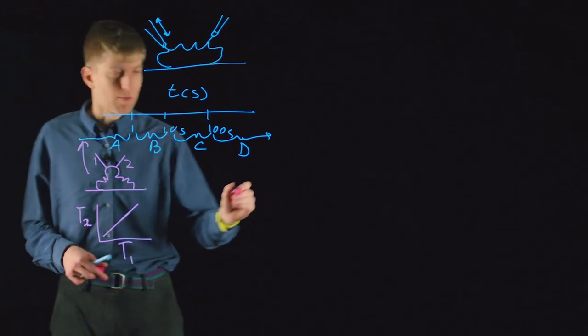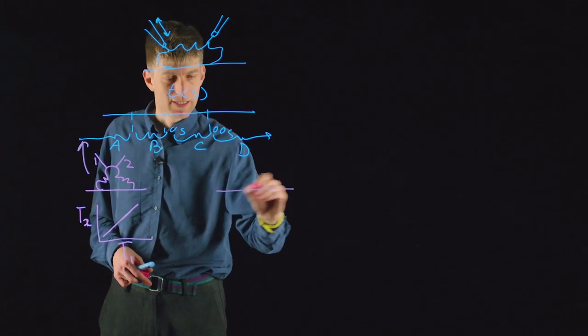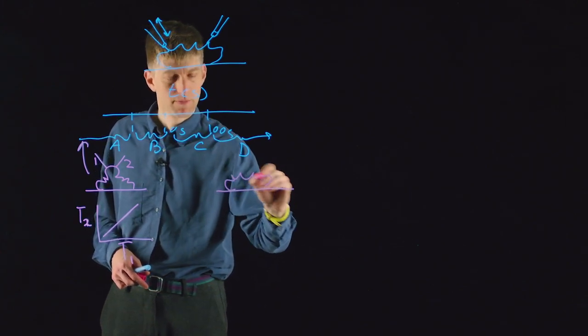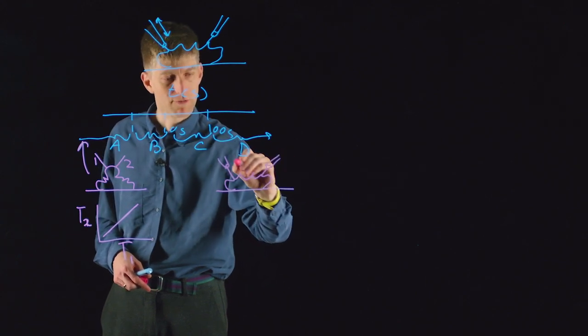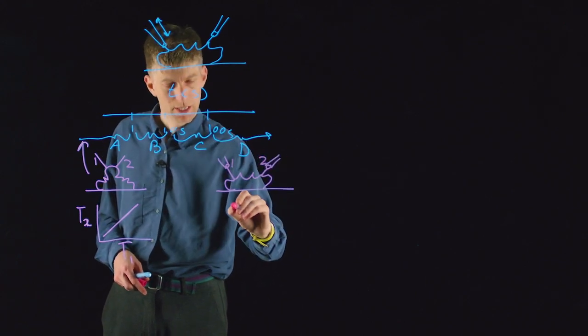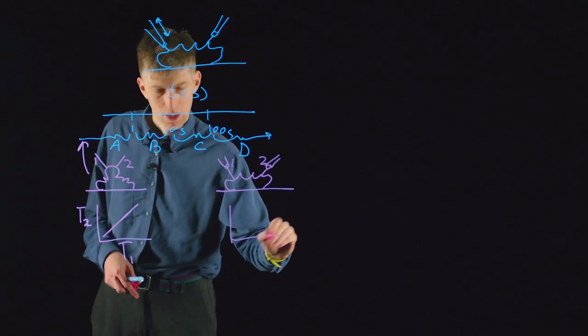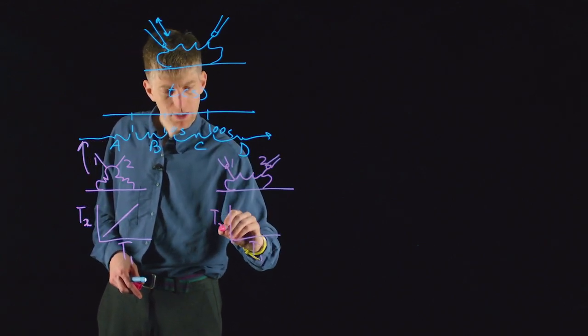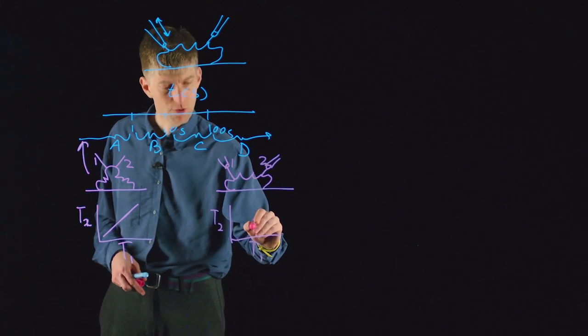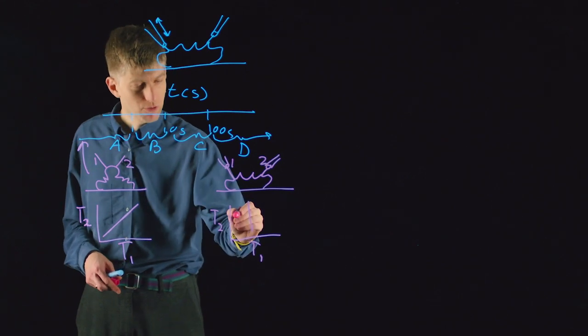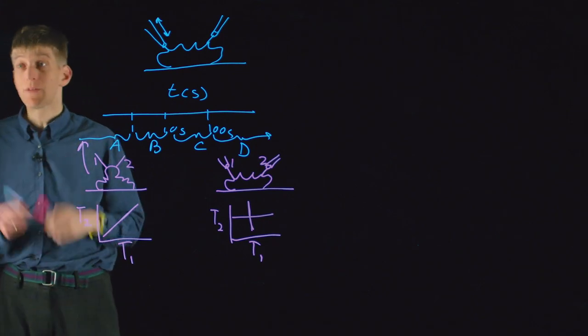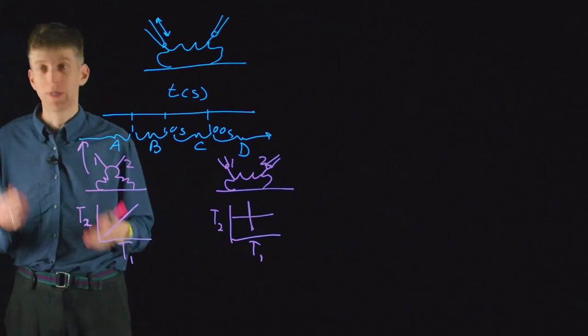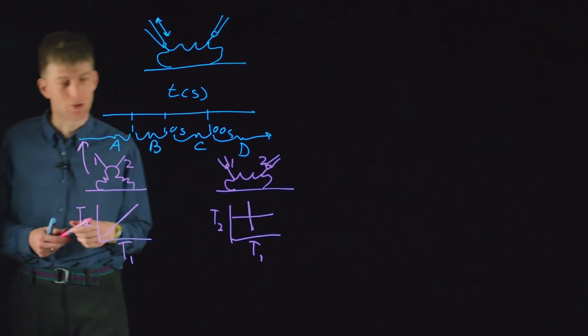We then repeated the experiment on an intact cell membrane and saw a totally different response. In this case, when we increased the tension in tether 1, we saw no response whatsoever in tether 2, and when we increased the tension in tether 2, we saw no response at all in tether 1. Even if we waited 10 minutes, we never saw any coupling between the tension in these two tethers.